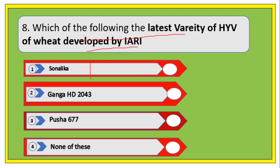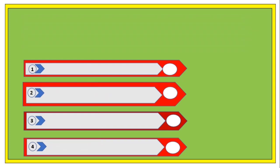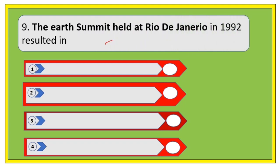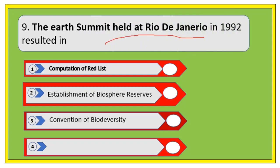Next question: the latest variety of wheat developed by IARI — the right answer is Ganga Safed 2043.